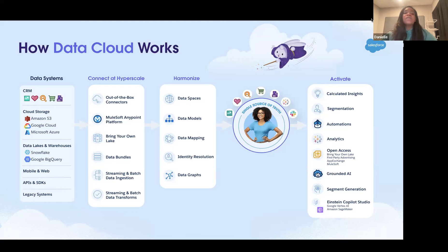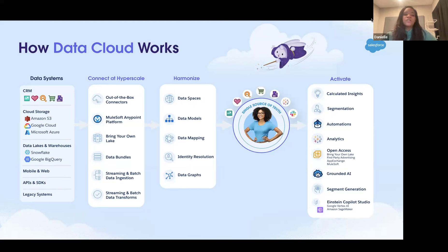This allows you to build a single source of truth of the customer. Previously, there was one way to get data into Data Cloud: use one of the out-of-the-box connectors or the Ingestion API, pull in all of that data into data lake objects, and then map it to the big data model objects.